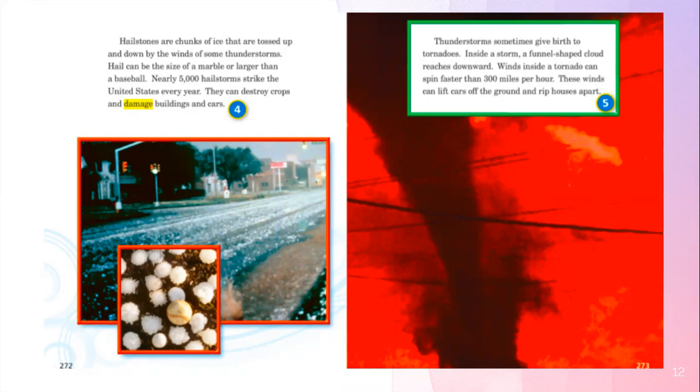Thunderstorms sometimes give birth to tornadoes. Inside a storm, a funnel-shaped cloud reaches downward. Winds inside a tornado can spin faster than 300 miles per hour. These winds can lift cars off the ground and rip houses apart.